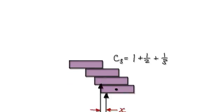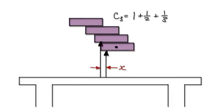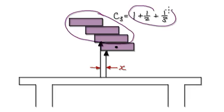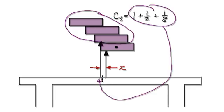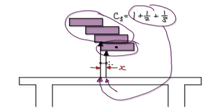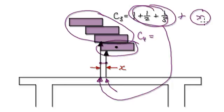Following on from the previous video, we have three blocks, and the center of gravity for three blocks was given by this. So this is our center of gravity, and then we're going to add an extra block, so this would be our new center of gravity right here. But then I ask you to find this distance here, so the new center of gravity C4 would be all this plus a mystery number x.